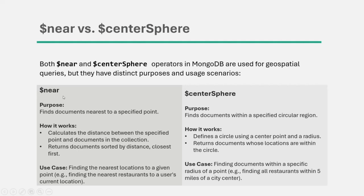Whatever result the $near operator returns is already sorted by distance, with the closest places coming first. But the $centerSphere operator defines a circle using a center point and a radius, and returns the documents whose locations are within that circle, within that radius. We can use $near when we want to find the nearest locations to a given point — for example, finding the nearest restaurants to a user's current location. We use $centerSphere to find all documents within a specific radius, for example finding all restaurants within 5 miles of a city center.